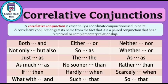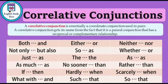The second type, my dear students, is correlative conjunctions. These include: both...and, not only...but also, just as...as, as much as, if...then, either...or, neither...nor, whether...or, as...as, rather than, scarcely...when, no sooner...than, such...that, and so...that.